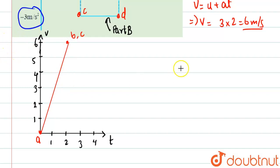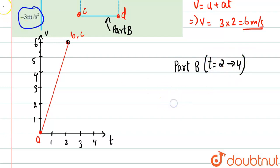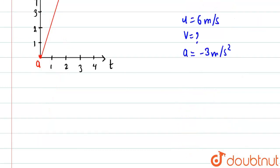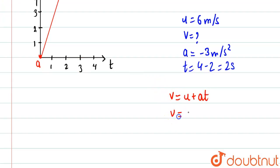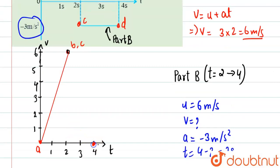For part B, from t equal to two to four seconds: u equals six meter per second, a equals minus three meter per second squared, and t equals two seconds. Using v equals u plus at, we get v equal to six plus minus three into two, which equals zero. So at t equal to four seconds, v equals zero — that is point d. Drawing the line from c to d completes the required velocity-time graph.